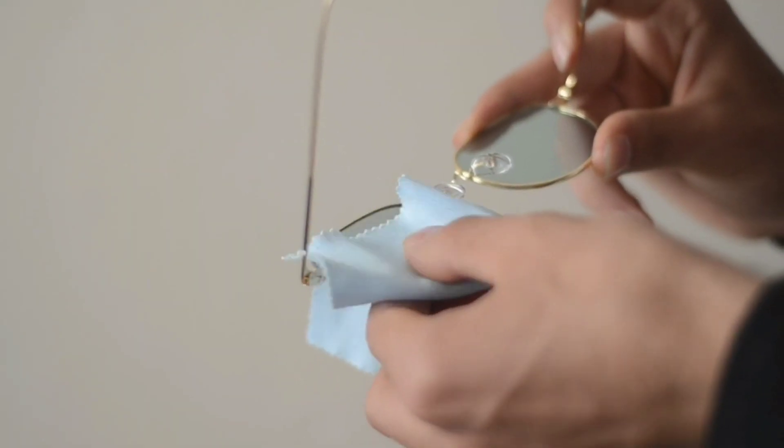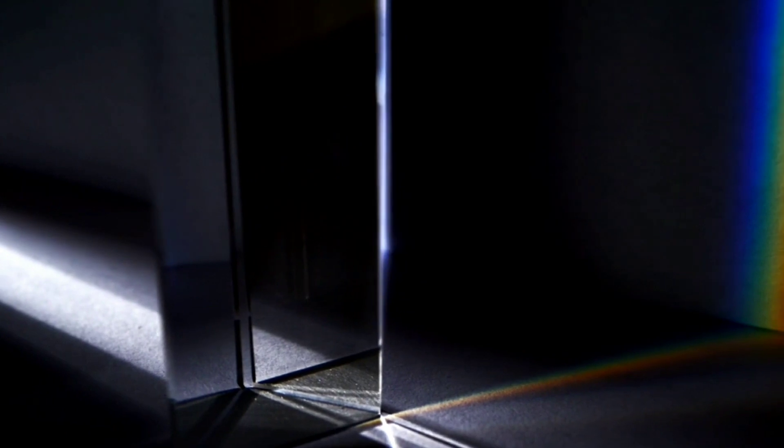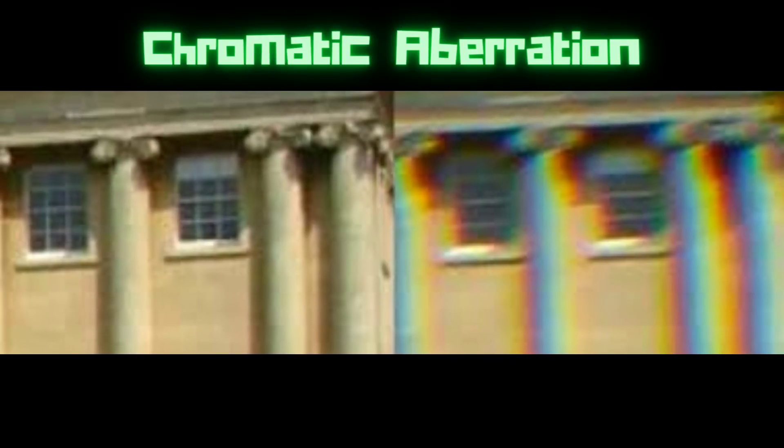Abbey value, or abbey number, describes how much the material disperses light, causing different colors to bend at different angles. Low abbey values result in more smudging of the colors, known as chromatic aberration, while higher abbey values reduce this.